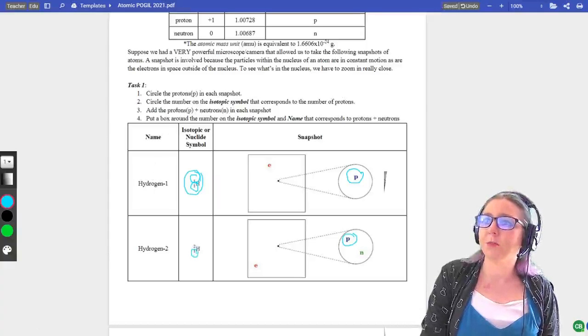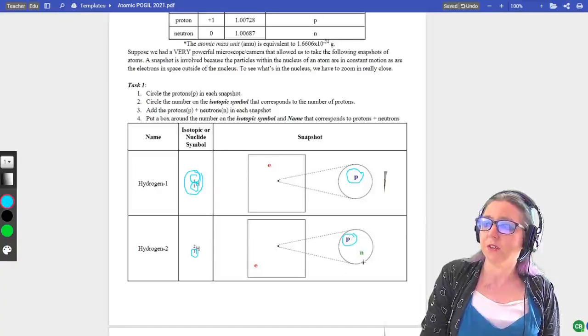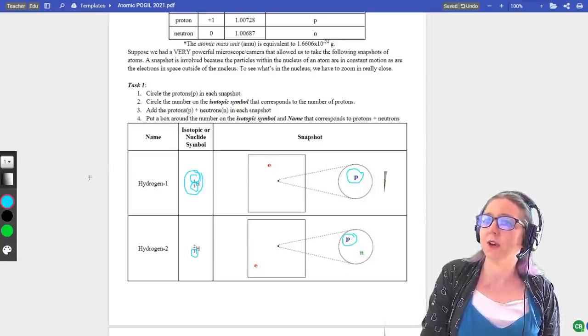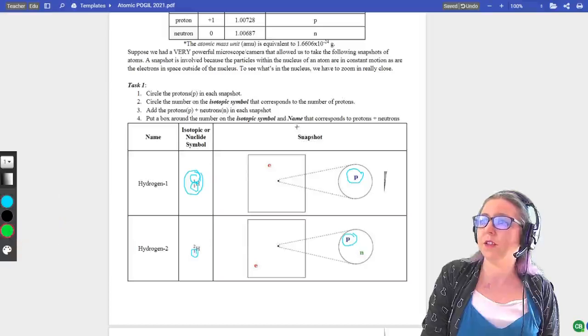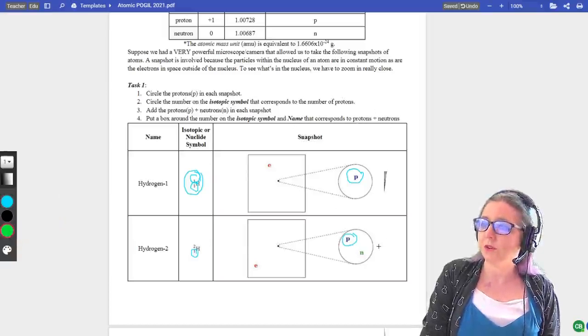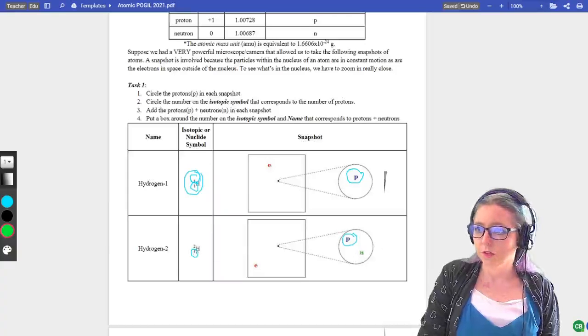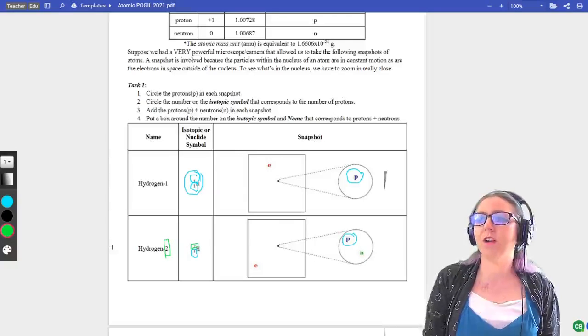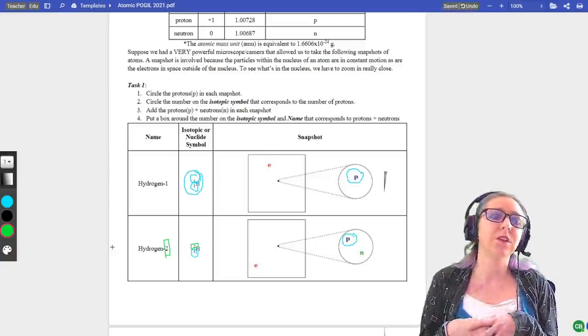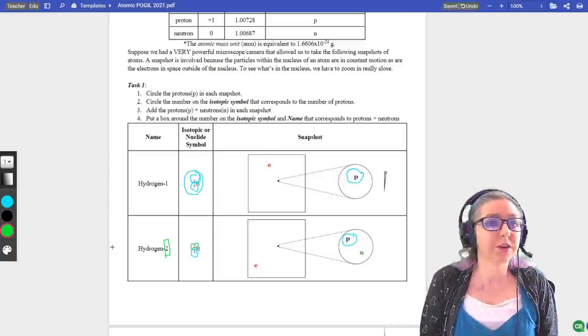Then when I move on to part two, add the protons and neutrons together. Well, I have one proton plus one neutron, so I have two. So now I put a box around the number of the isotopic symbol and name that corresponds to protons plus neutrons. So one proton plus one neutron gave me two. So I would put a box around that two. If you're doing the draw tool, it might be kind of hard to show the difference between a box and a circle, so different colors might help, or just try your best.